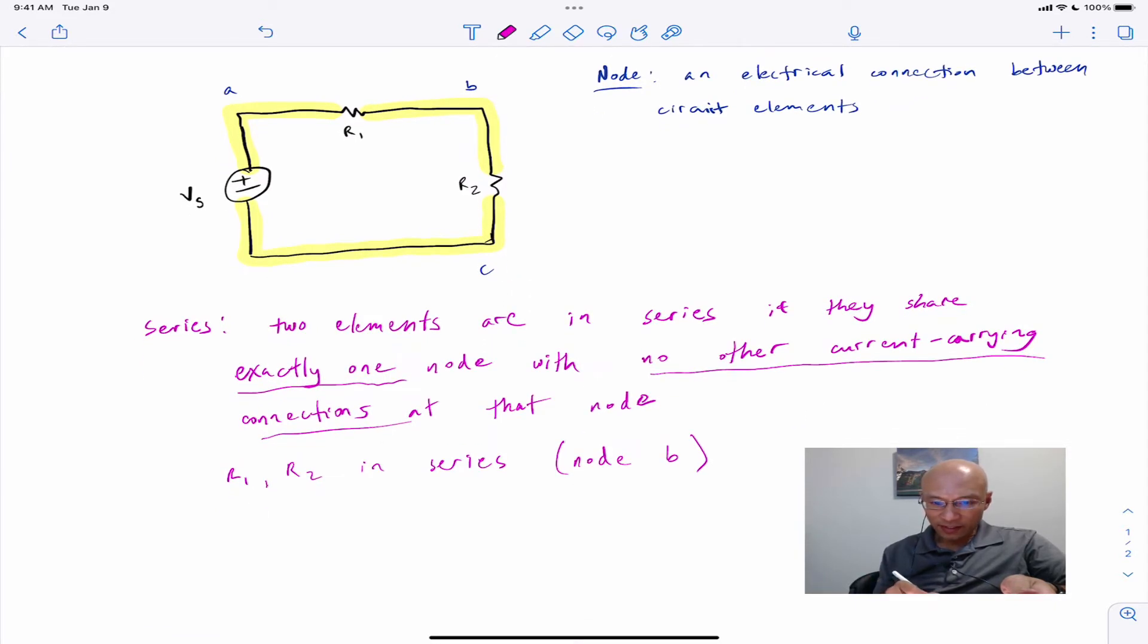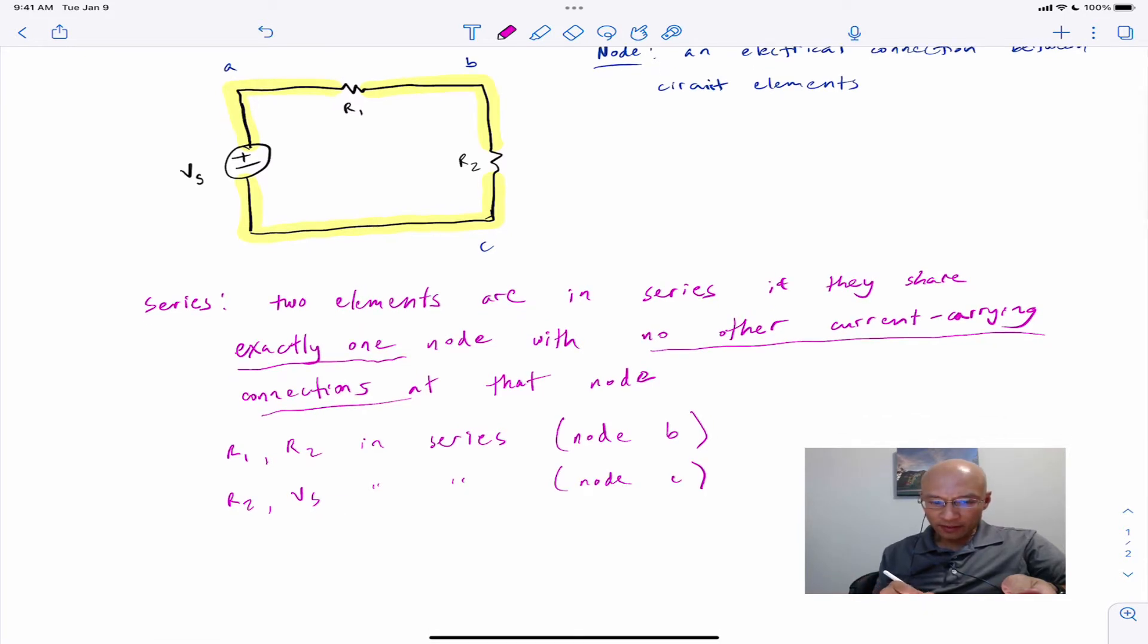Similarly, we can say that R2 and the voltage source are in series because they're connected at node C. And finally, we can say that the voltage source and R1 are in series. They're connected at node A.